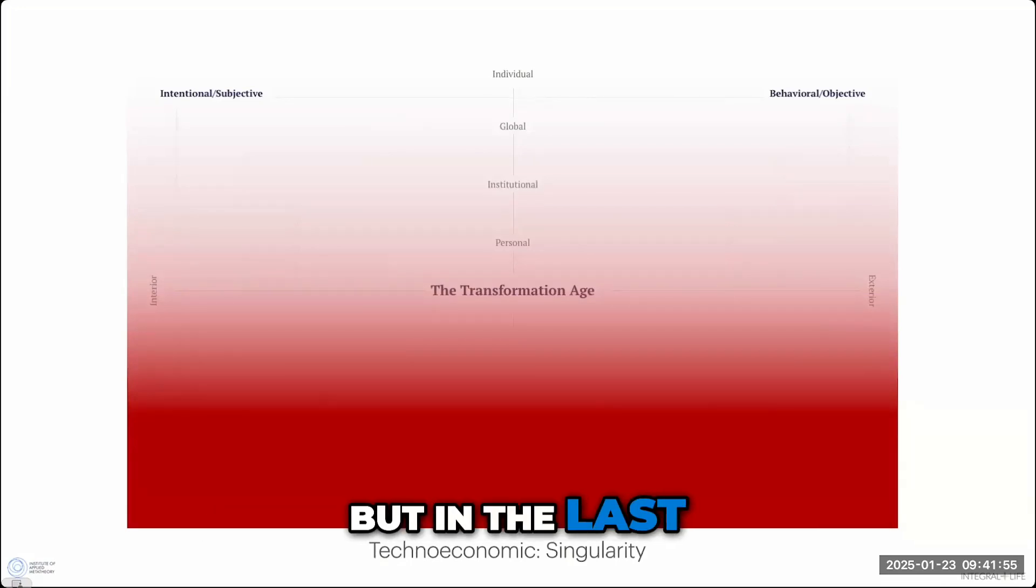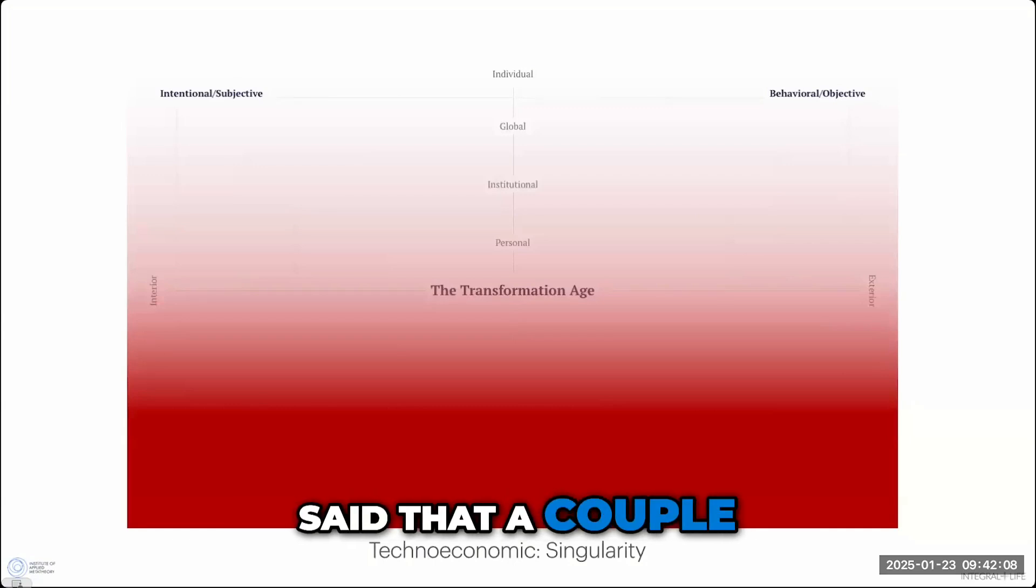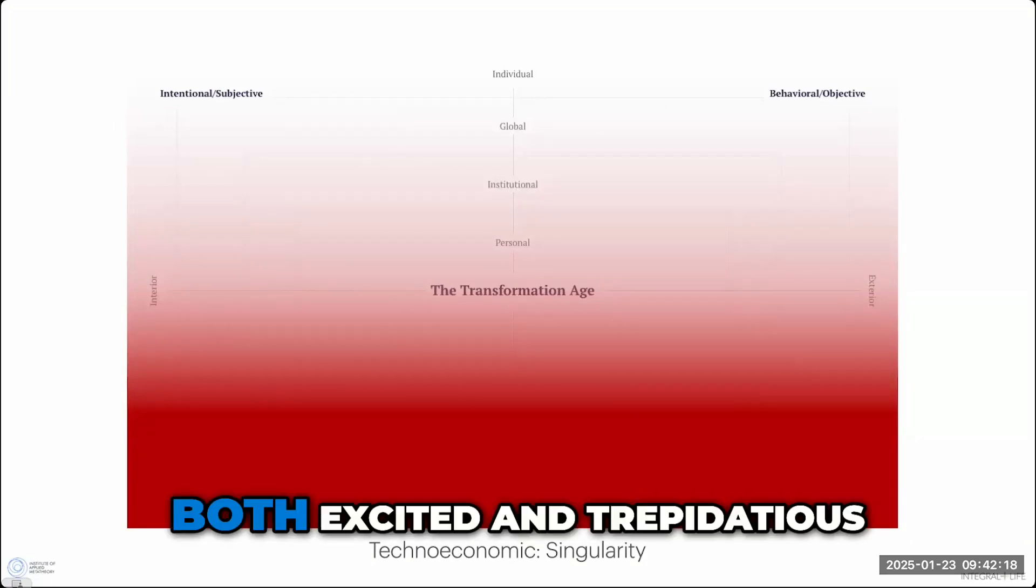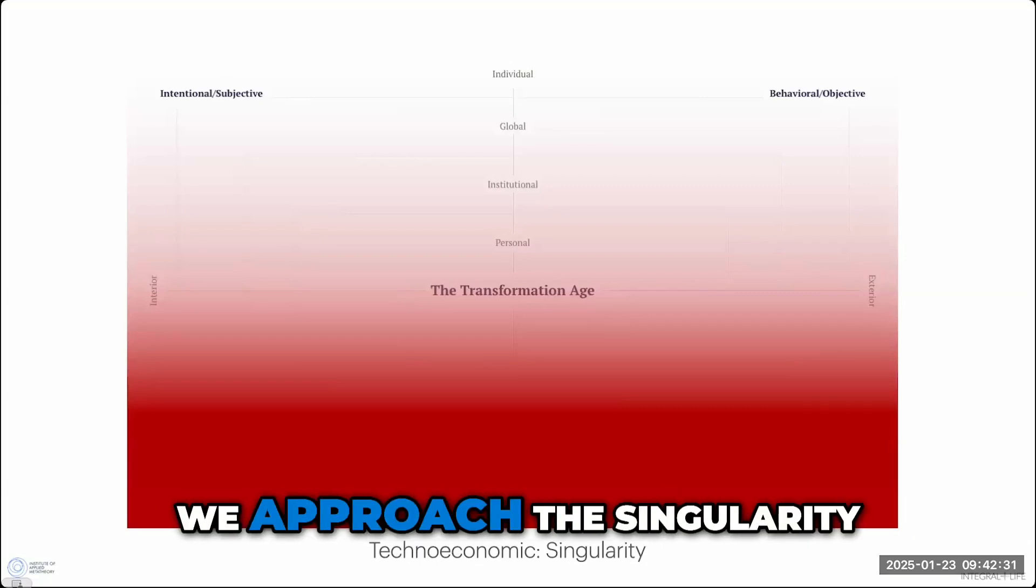But in the last few weeks, literally, those researchers are beginning to say they think they have credible line on AGI. They think they're seeing a line to it. Sam Altman from OpenAI said that a couple of weeks ago. And the researchers that are beginning to make noise are both excited and trepidatious about what they're seeing. They can't fully account for what they're actually looking at. This is what you'd expect to hear as we approach the singularity.